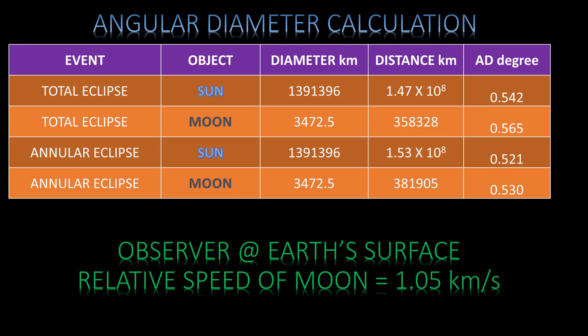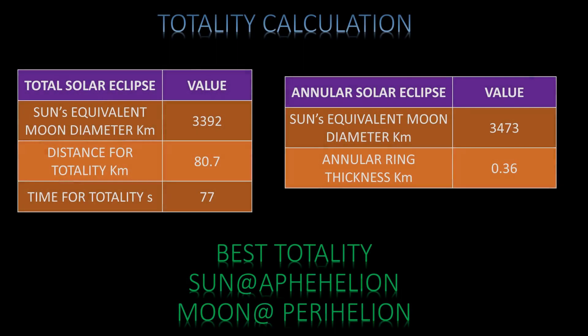If the angular diameter of the moon is greater than that of the sun, we will have totality. Otherwise, it will be an annular eclipse. From the angular diameter of the sun, we can calculate the equivalent diameter of the sun at the distance of the moon. The difference between the moon's diameter and the equivalent diameter of the sun at the moon's distance gives the totality distance.